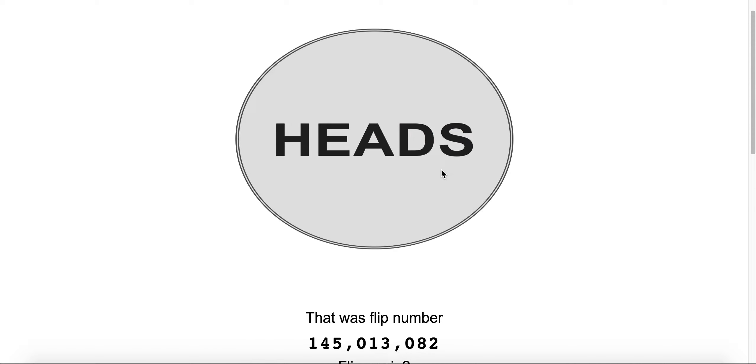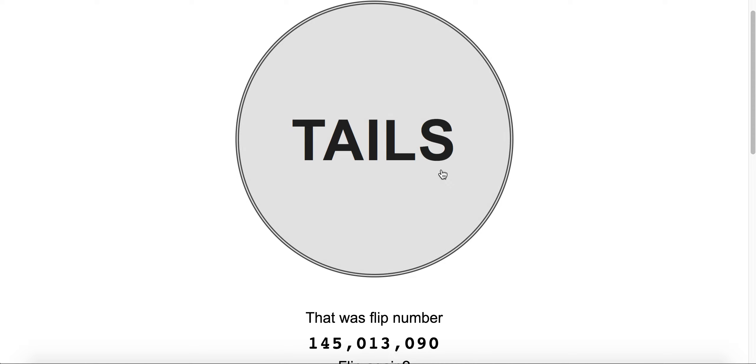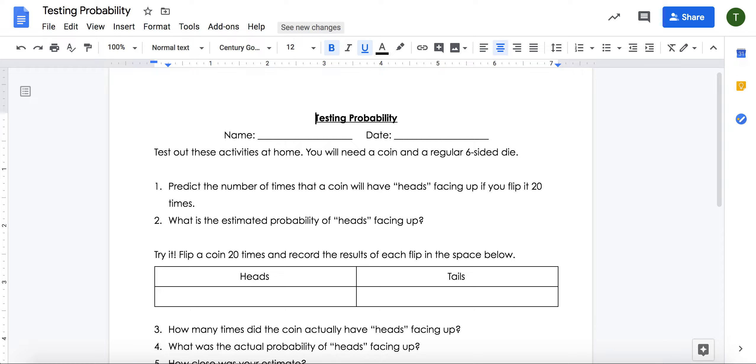Click again, tails. You can keep flipping 20 times and record the number of times that you landed on heads or on tails in your document here. So in your chart, count how many times you landed on heads and count how many times you landed on tails.